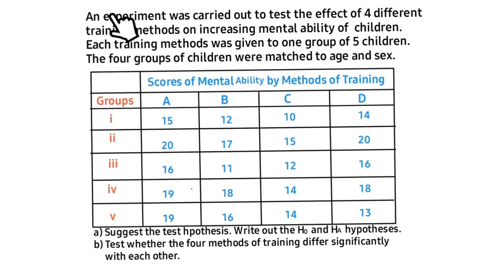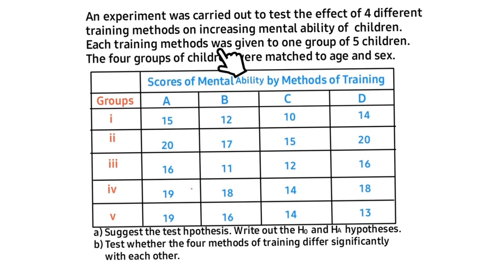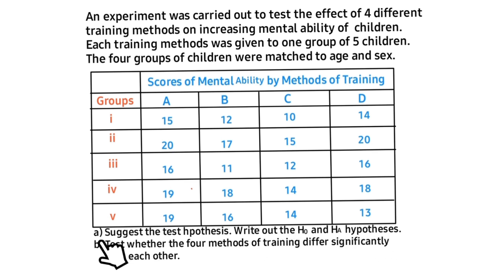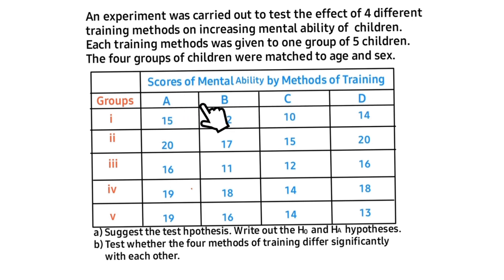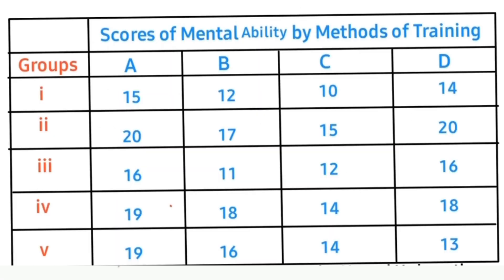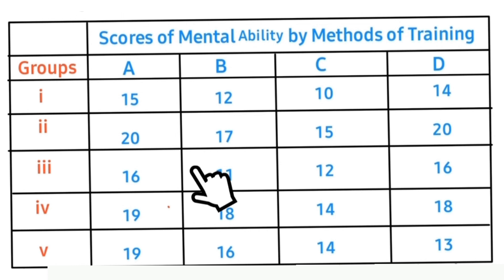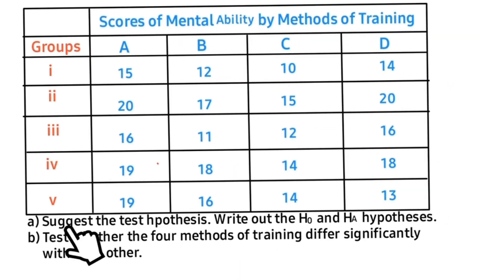The challenge on the board states: an experiment was carried out to test the effect of four different training methods on increasing the mental ability of children. Each training method was given to one group of five children. The four groups of children were matched by age and sex. The table shows four different training methods — A, B, C, D — associated with groups of children from group one to five. This is a good example of a randomized block ANOVA without replication.